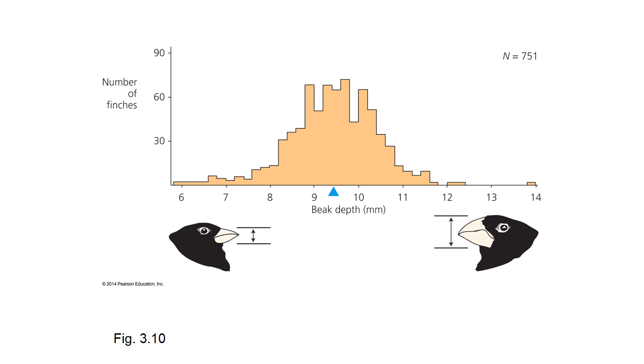This answers the question: was the population variable? And the answer is yes — there was variation in the population.